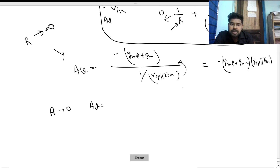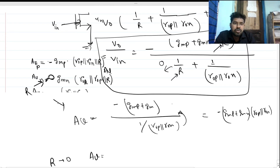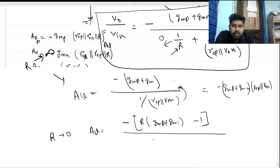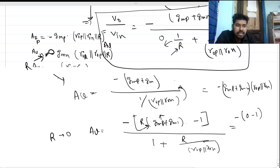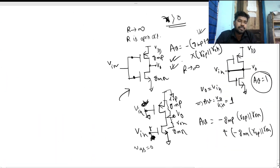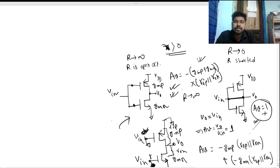Now for R equals zero, we rearrange the expression as: Av equals minus R times (gmp + gmn) minus 1, all divided by 1 plus R times (1/(rop||ron)). Putting R equals zero, the numerator becomes minus zero minus one equals minus one, and the denominator becomes one plus zero equals one, giving Av equals plus one. This exactly matches our expected result for the short-circuit case.